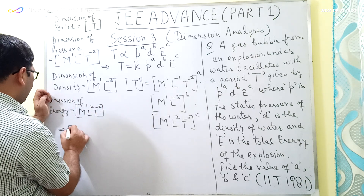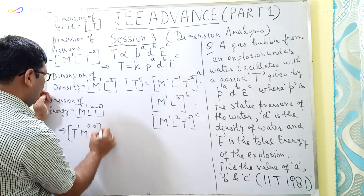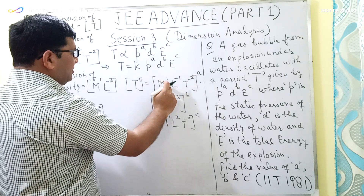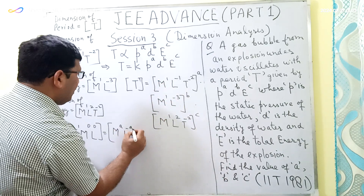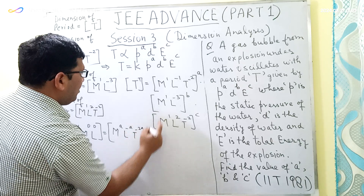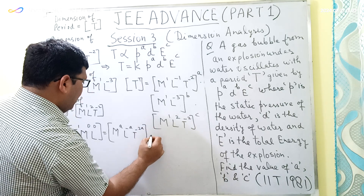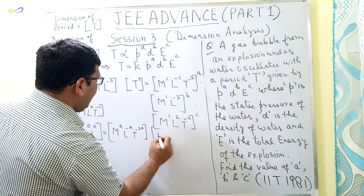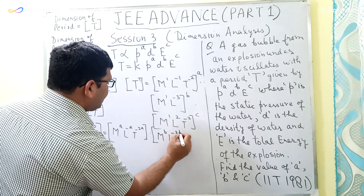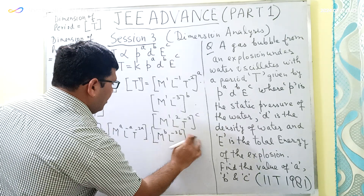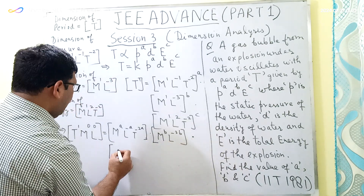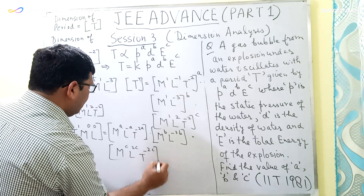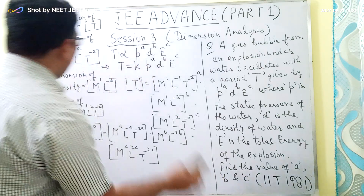This equation can be written as T¹M⁰L⁰ = M^A · L^(−A) · T^(−2A), multiplied by M^B · L^(−3B), multiplied by M^C · L^(2C) · T^(−2C). This is the full dimensional equation which we now have to solve.